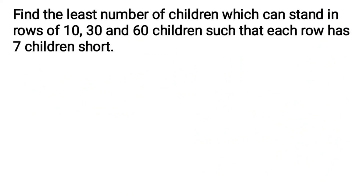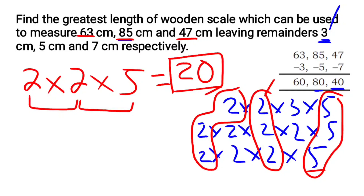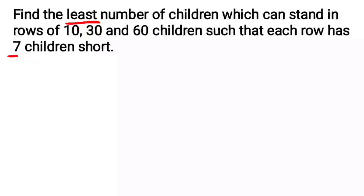Problem 4: Find the least number of children which can stand in rows of 10, 30, and 60 such that each row has 7 children short. We need to find the least number of children where each row falls short by 7, so we find the LCM of 10, 30, and 60.